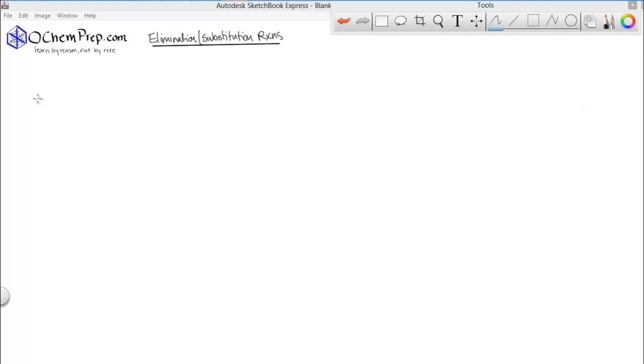Okay, let's look at elimination reactions. We're going to take an alkyl halide, say this one, 2-bromobutane, and treat it with a strong base. NaOH will work.